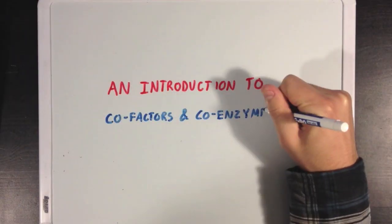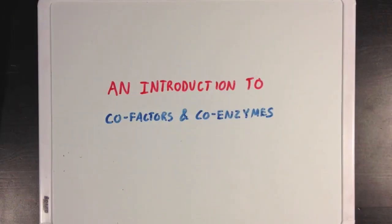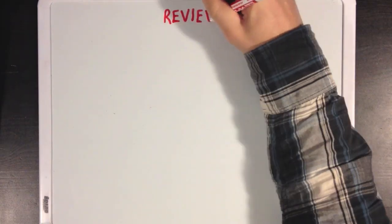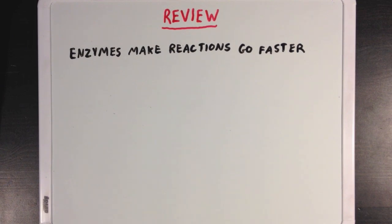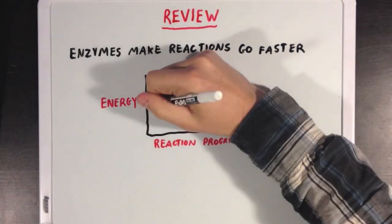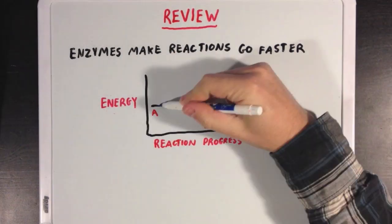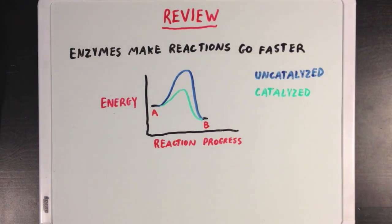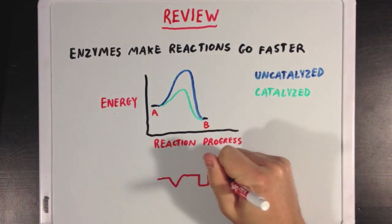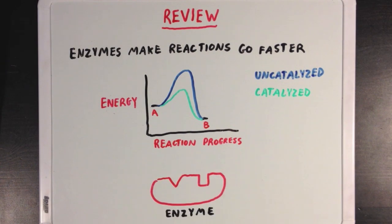Today we're going to talk about cofactors and coenzymes, and how sometimes they can be essential to proper enzymatic function. But first, let's review the idea that enzymes make reactions go faster, and they do this by lowering the activation energy peak of their respective reactions. Let's also review the idea that enzymes bind their substrates at a location on the enzyme called the active site, which is where most of the reaction takes place.